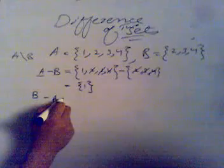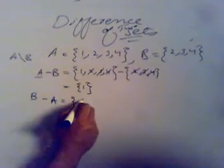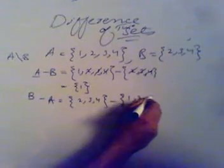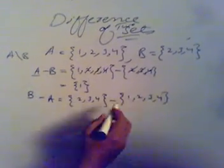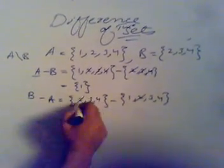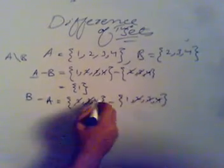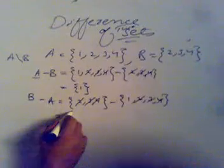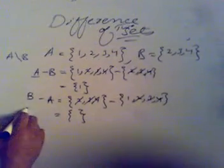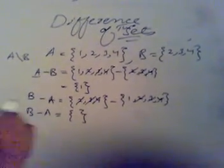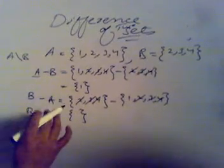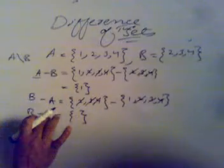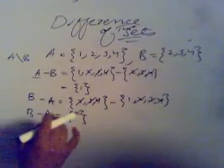Now I want to calculate B minus A. I write the value of B: 2, 3, 4, then minus the value of A: 1, 2, 3, 4. I cancel the same elements. After cancellation, there is nothing left in the first set, so the difference is the empty set. The answer is always those elements left in the first set — we do not consider the second set.